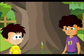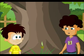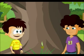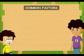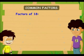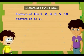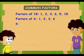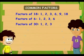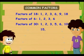But how? First, let's factorize the length of the three logs. The factors of 18 are 1, 2, 3, 6, 9, and 18. The factors of 6 are 1, 2, 3, and 6. And the factors of 30 are 1, 2, 3, 5, 6, 10, 15, and 30.